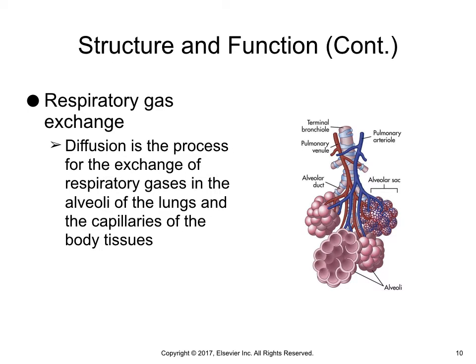Diffusion of respiratory gases occurs at the alveolar capillary membrane. The thickness of the membrane affects the rate of diffusion; increased thickness impedes diffusion because gases take longer to transfer across the membrane. Patients with pulmonary edema, pulmonary infiltrates, or pulmonary effusion have a thickened membrane, resulting in slow diffusion, slow exchange of respiratory gases, and decreased delivery of oxygen to tissues. Chronic diseases such as emphysema, acute diseases such as hemothorax, and surgical processes such as lobectomy often alter the amount of alveolar capillary membrane surface area.